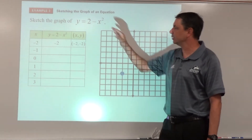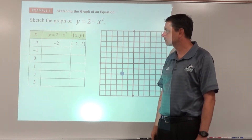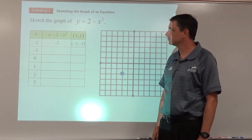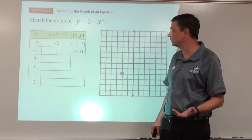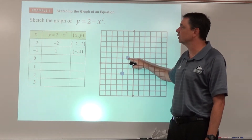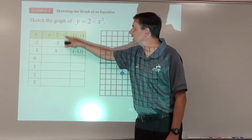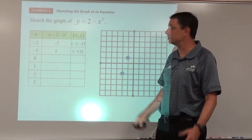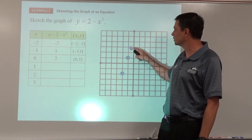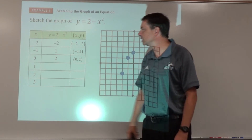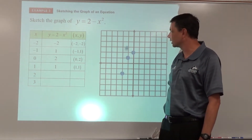Plug in x = -1: 2 - 1 = 1, giving the point (-1, 1). For x = 0: 2 - 0² = 2, giving (0, 2). For x = 1: 2 - 1² = 1, giving the point (1, 1).